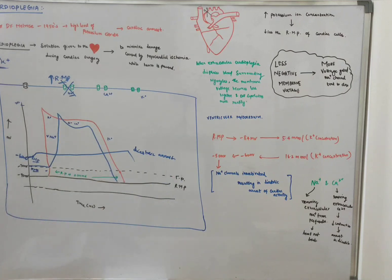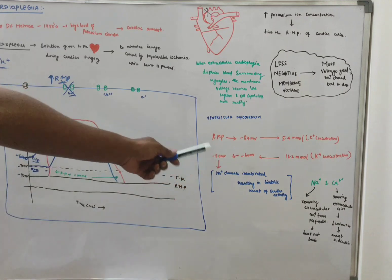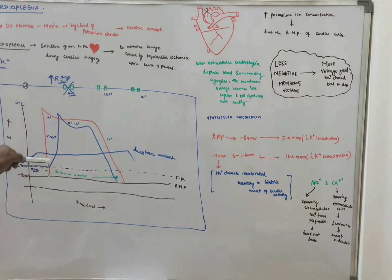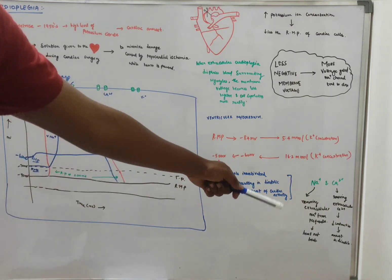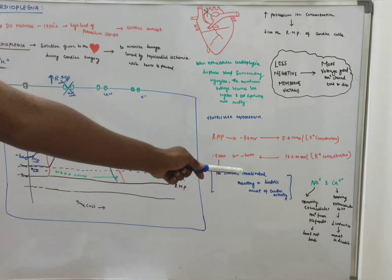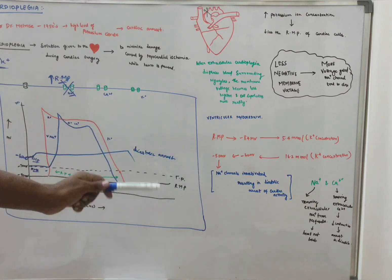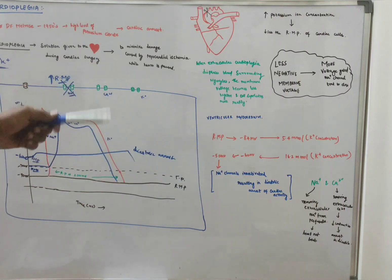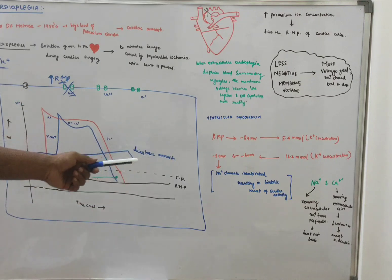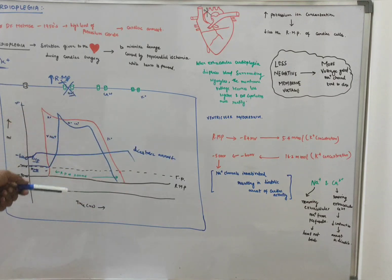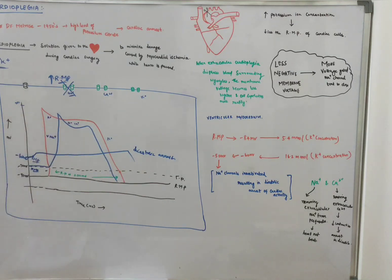With no further sodium ion depolarization, sodium ions are removed from the process. With depolarization blocked and excess calcium ions removed, we have no contraction, and thus no cardiac activity. That's all about Cardioplegia and cardiac arrest.